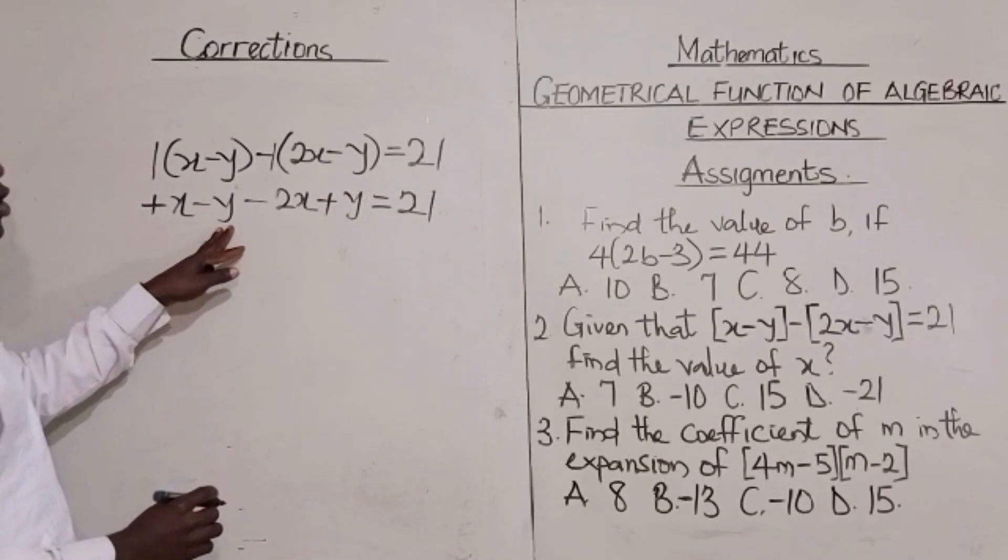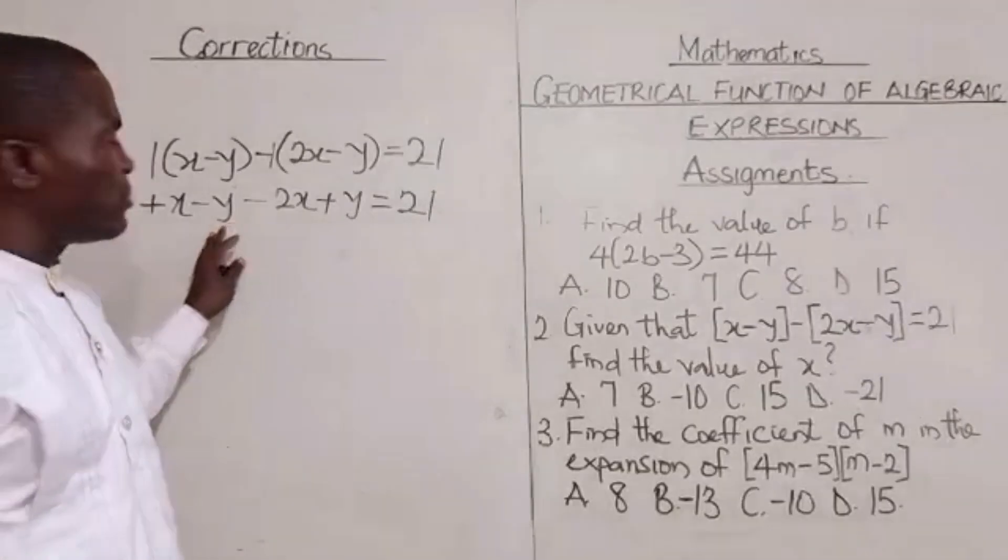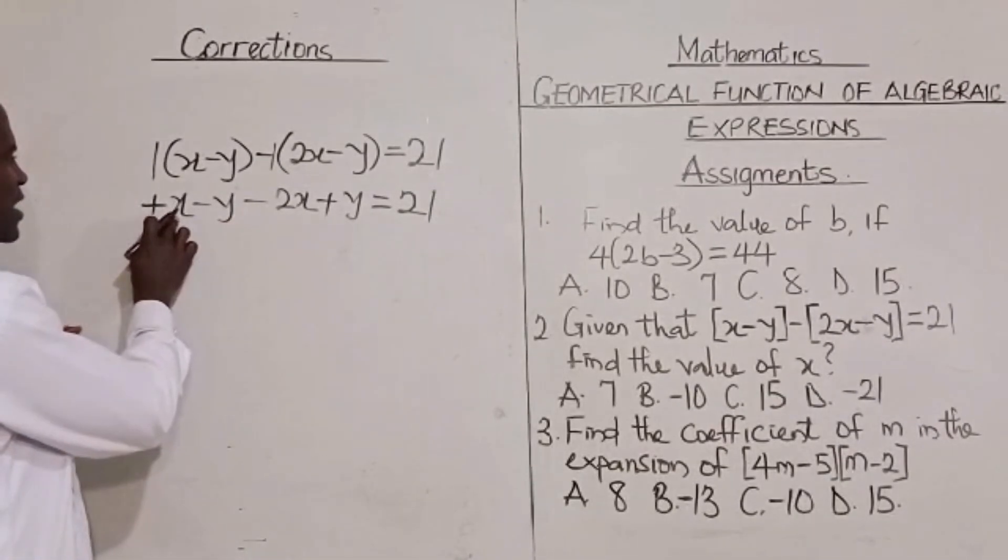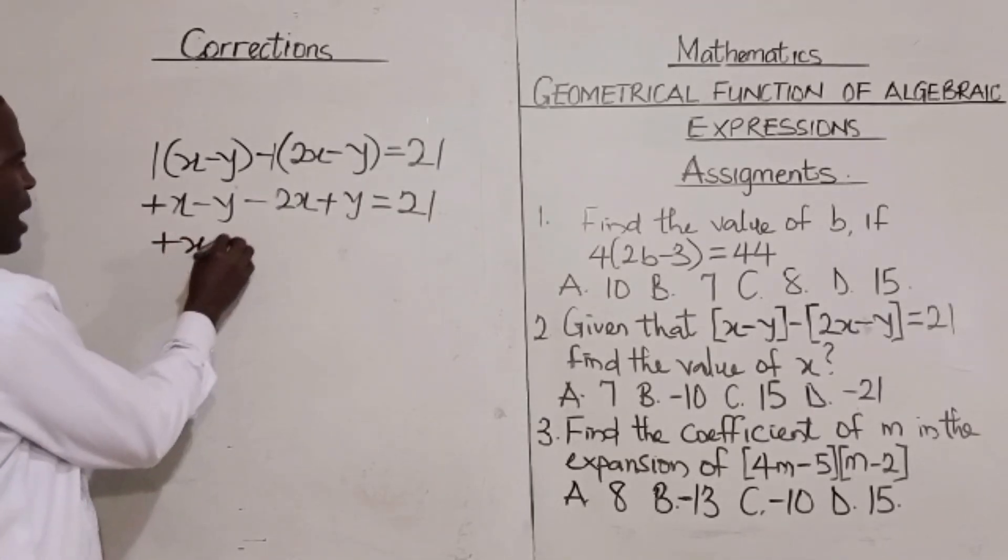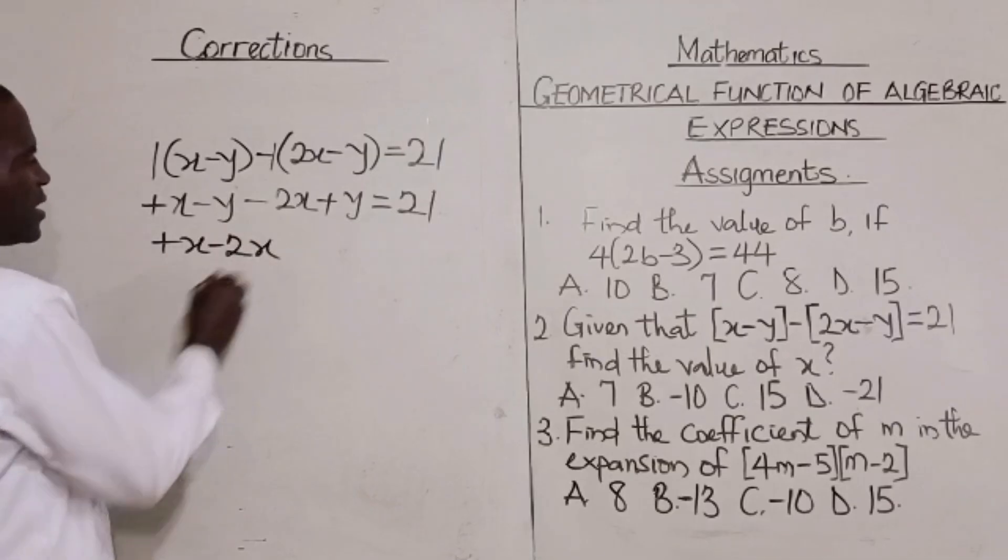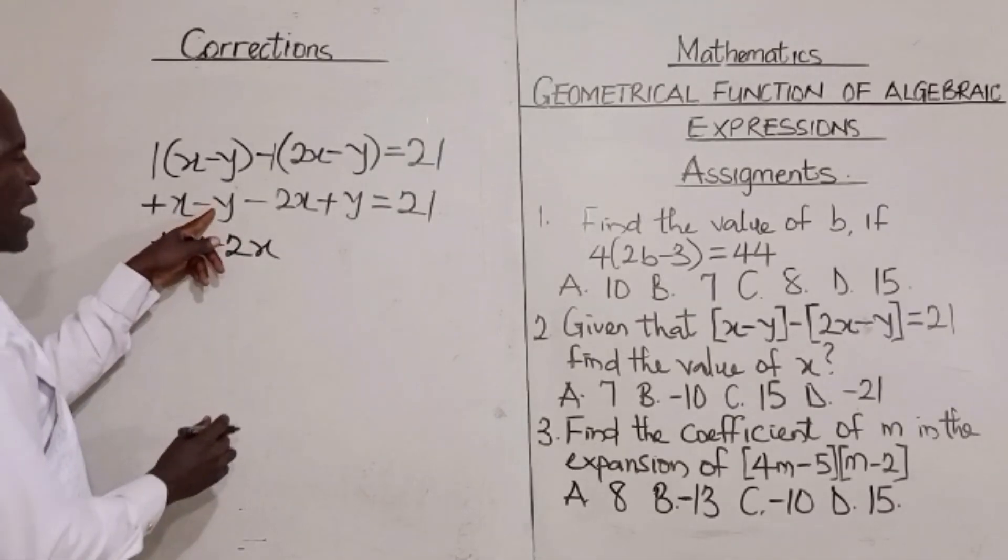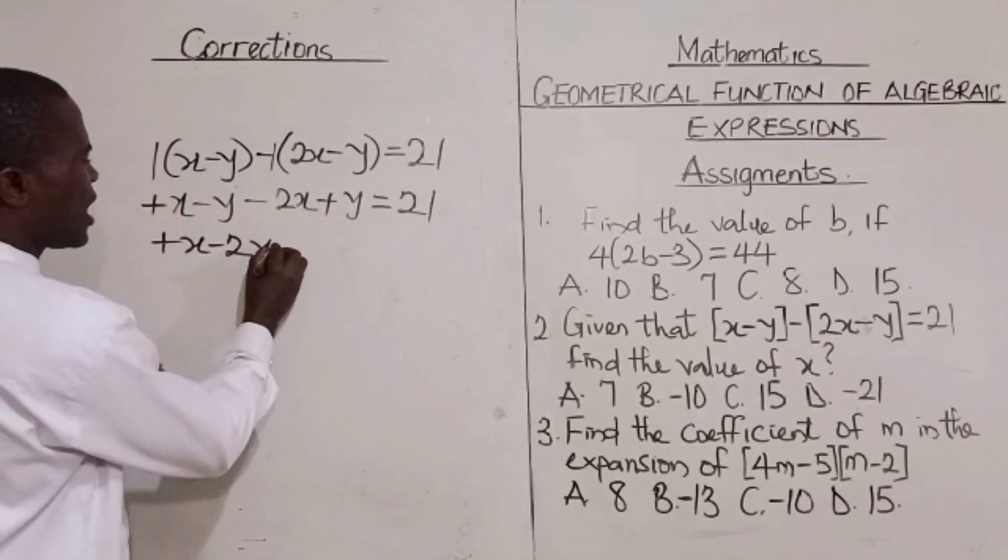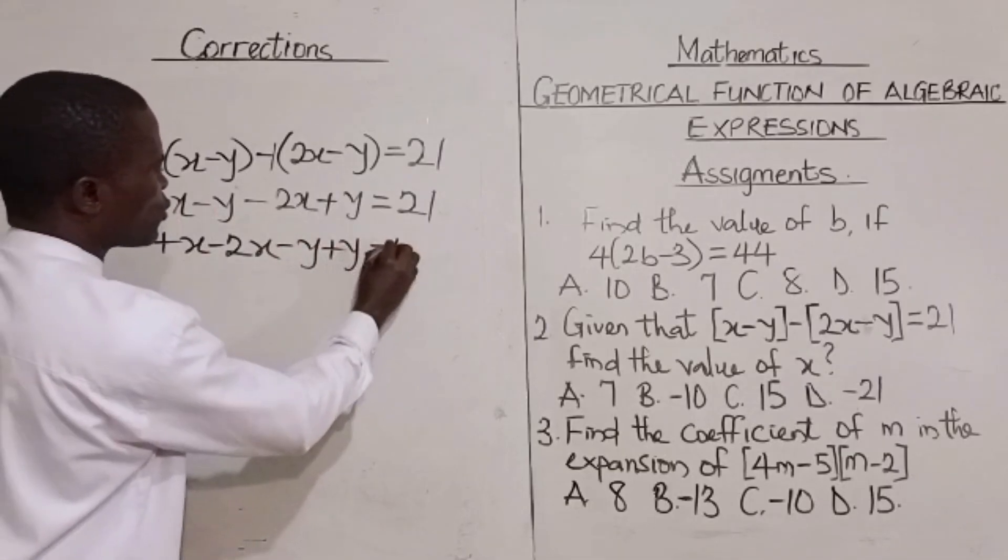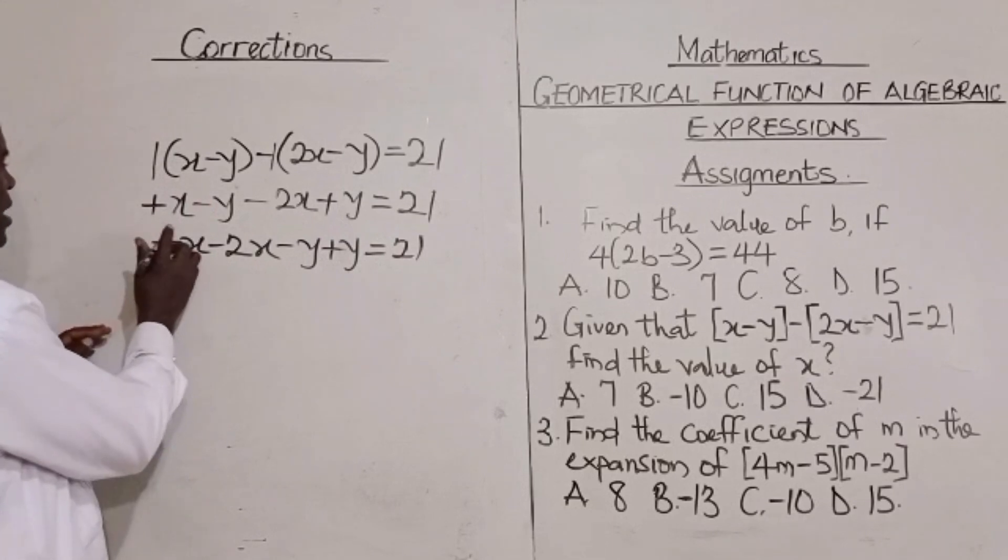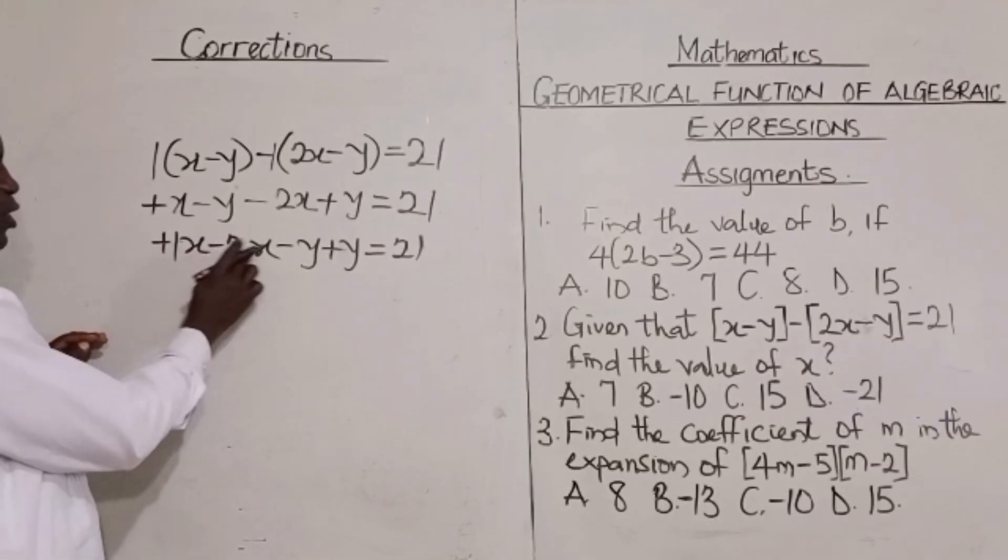What we are going to do next is to collect the like terms. This is like with this. We bring it together. That means we are going to have plus x minus 2x. They are like terms. Then, this minus y is also like with this. We have minus y plus y is equal to 21.